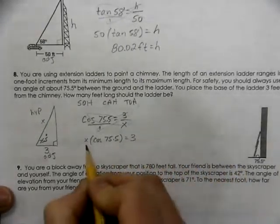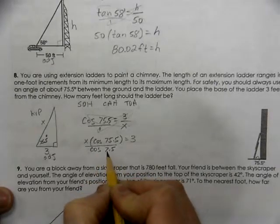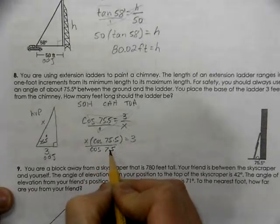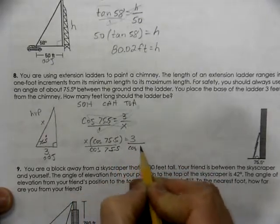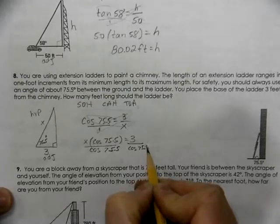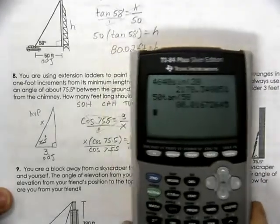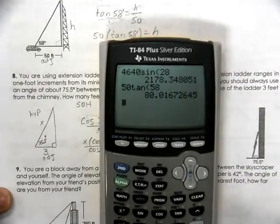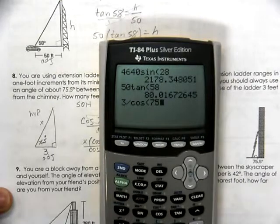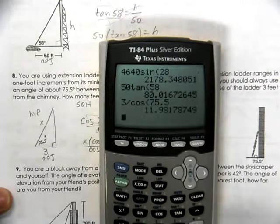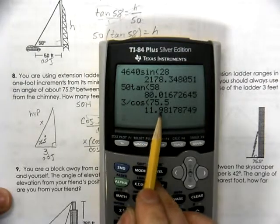And then we would need to divide by the cosine of 75.5. So, 3 divided by the cosine of 75.5. We get 11.98.